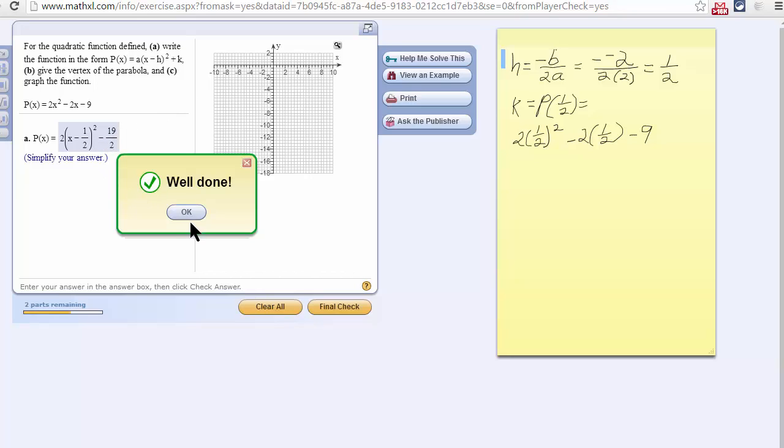I checked my answer, and this is right. Here is this equation in vertex form: 2 parentheses x minus 1 half close parentheses squared minus 19 over 2.